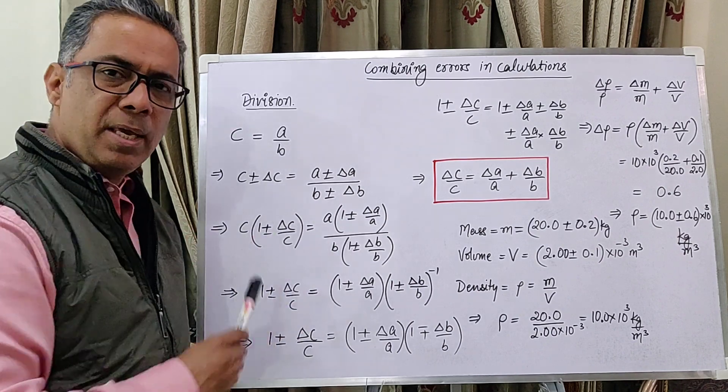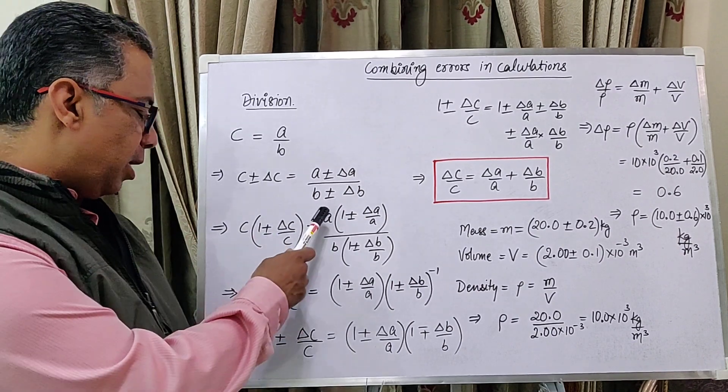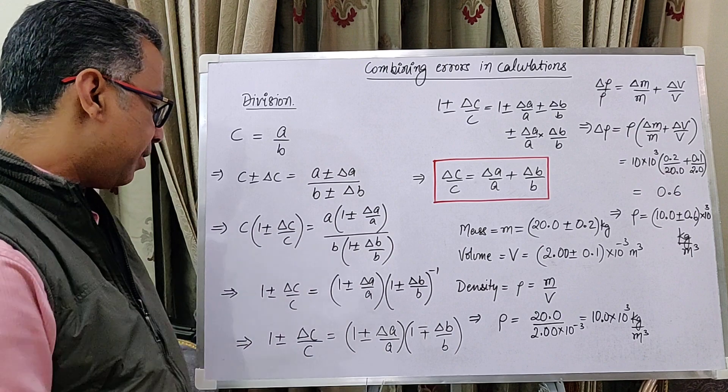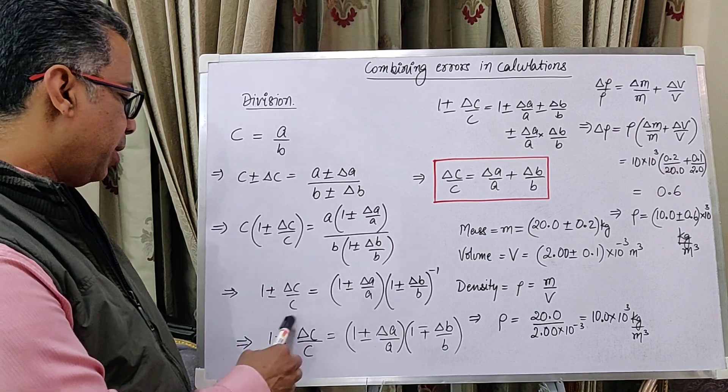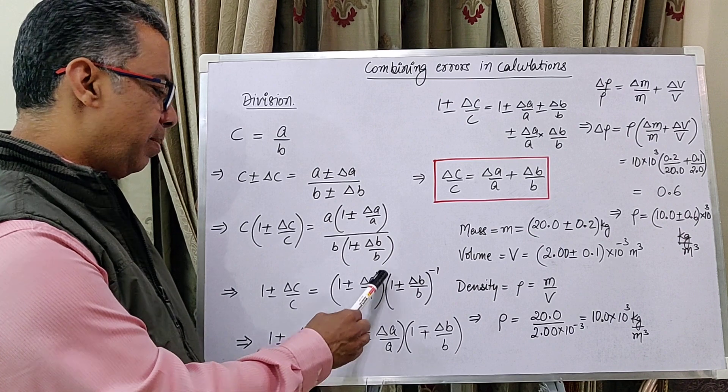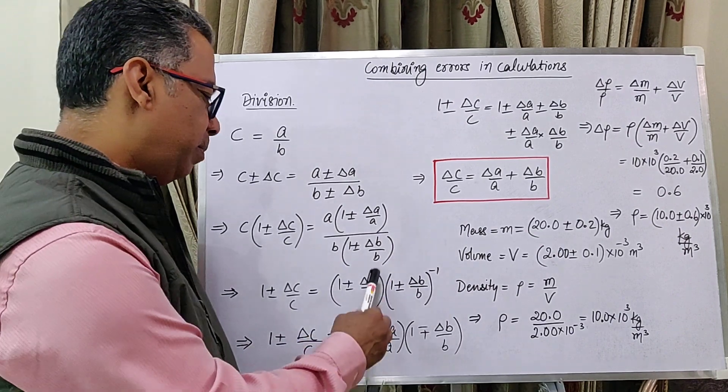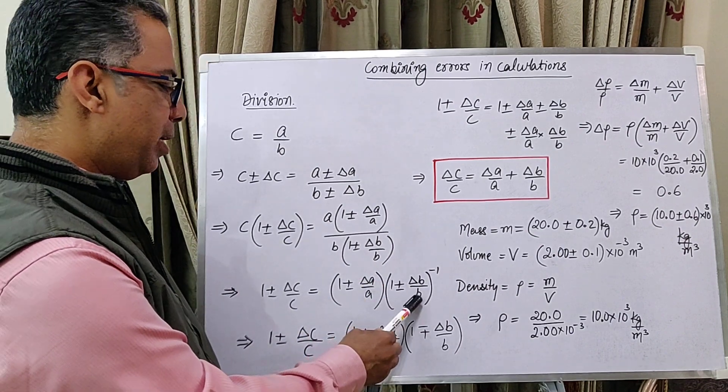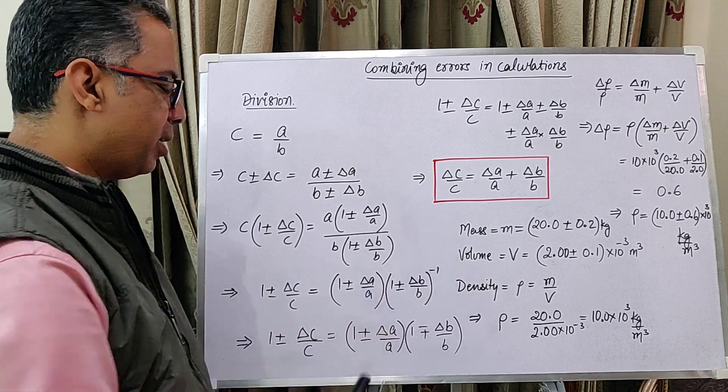Now, C equals A by B, and since C equals A by B, we have a cancellation here. And so, 1 plus minus delta C by C equals 1 plus minus delta A by A times 1 plus minus delta B by B raised to the power minus 1.